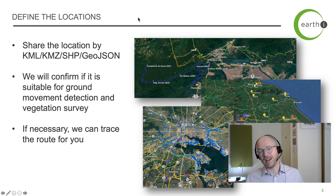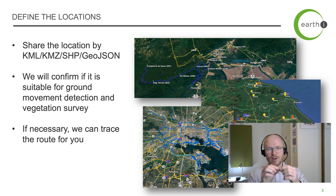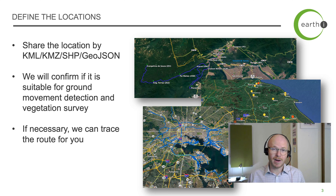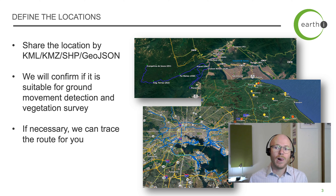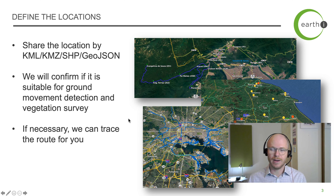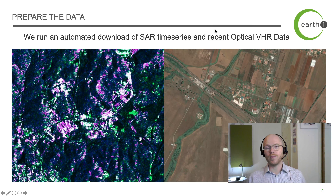Defining the location has a few ins and outs but it's pretty straightforward. A lot of organizations have KML or shape files that give us nicely defined routes of the railway lines — we take those and confirm they're okay for the ground movement and vegetation survey. Not everyone has that; some have route maps but not precise locations, others might just have the station names. If necessary, we can trace the route ourselves from imagery to make sure outputs are accurate. Here are a few examples of some of the projects we've been working on.